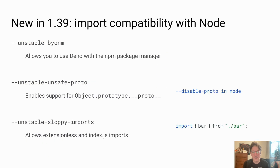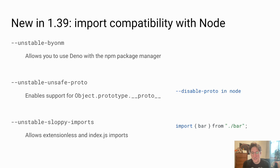There is a new flag in 1.39 that adds to these other flags and helps with import compatibility with Node. The new flag is unstable sloppy imports. We also have unstable unsafe proto and unstable BYONM. These flags enable various unsavory behaviors that come from Node. The sloppy imports flag in particular allows Dino to understand extension-less imports and directory imports with index.js files.